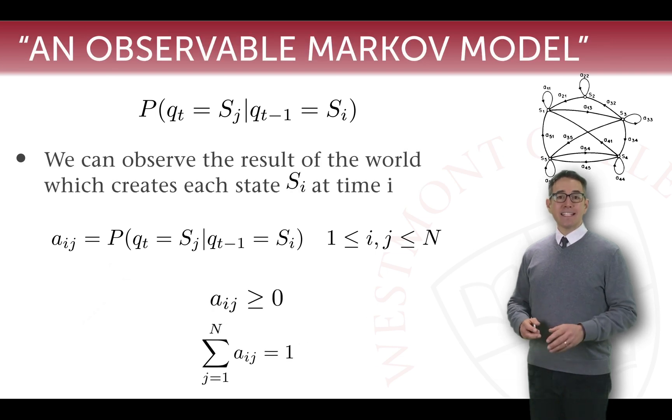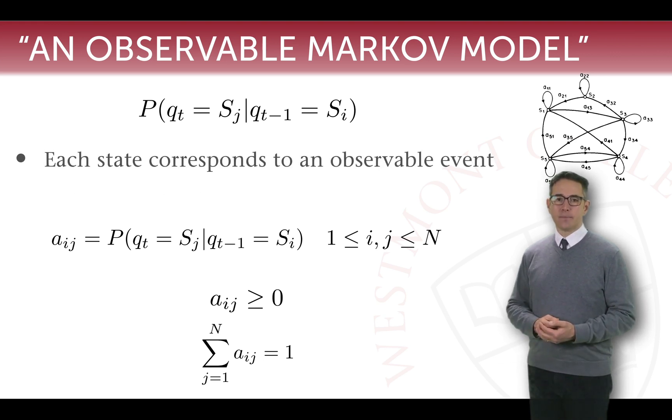So this is called an observable Markov model and I draw that out to contrast it from the hidden Markov model which is where we're moving towards. This means that we can observe the result of the world, whatever world we're modeling, which is creating each state si at time i. We can observe that, we can see that, we can verify it, we can train on it. Each state corresponds to an observable event, something that we can directly see and know. Different than a hidden Markov model. But for the observable Markov model this is how we operate.